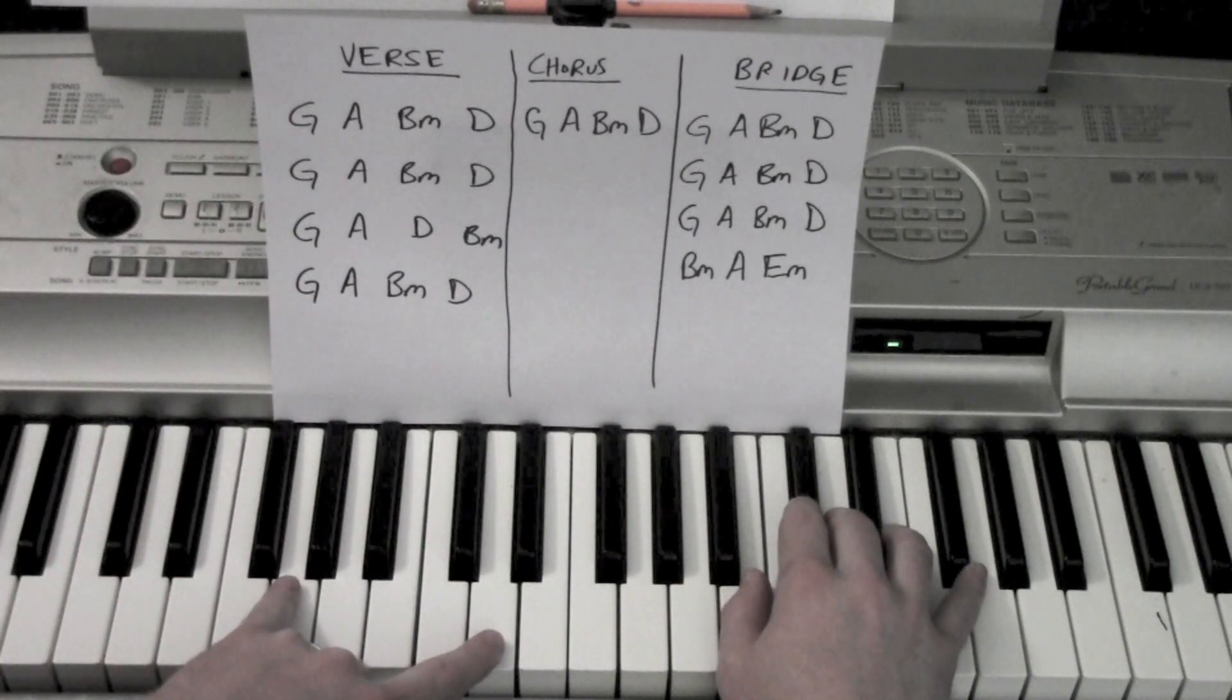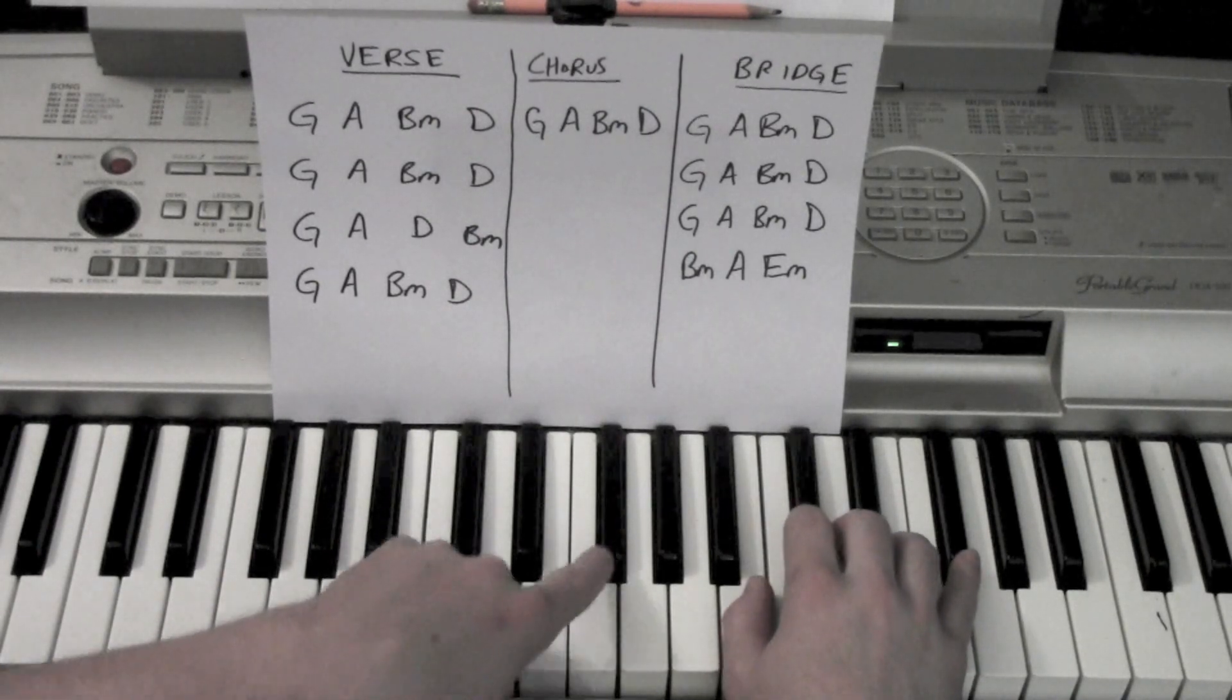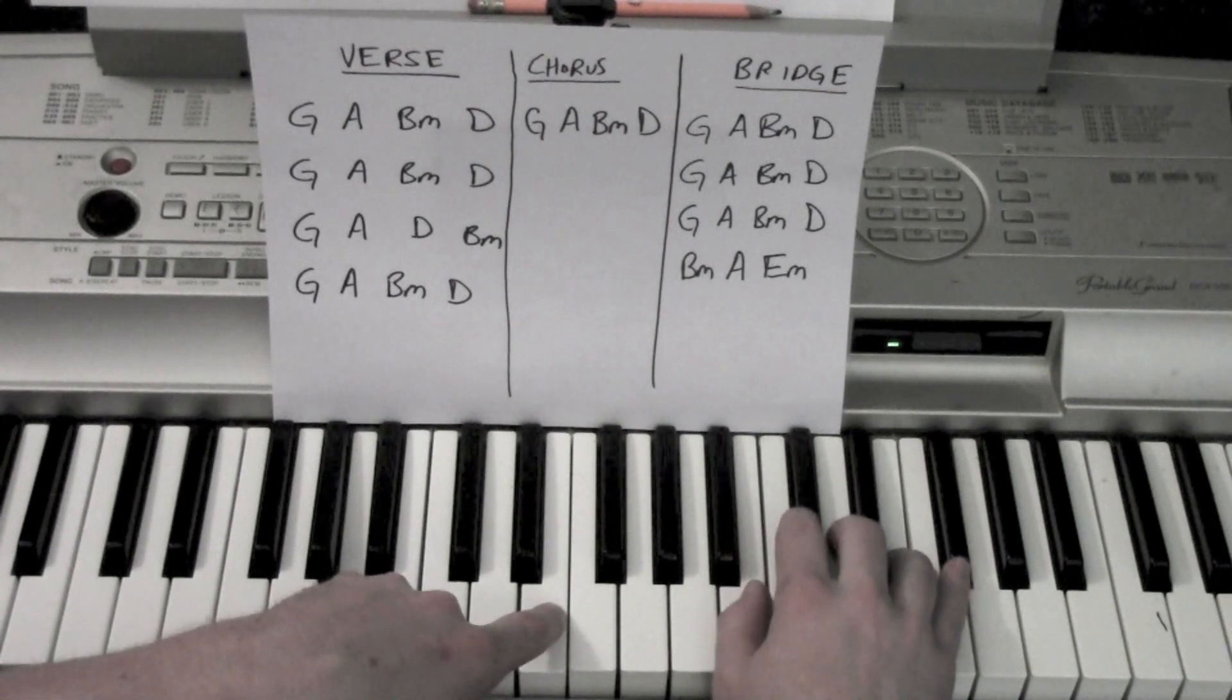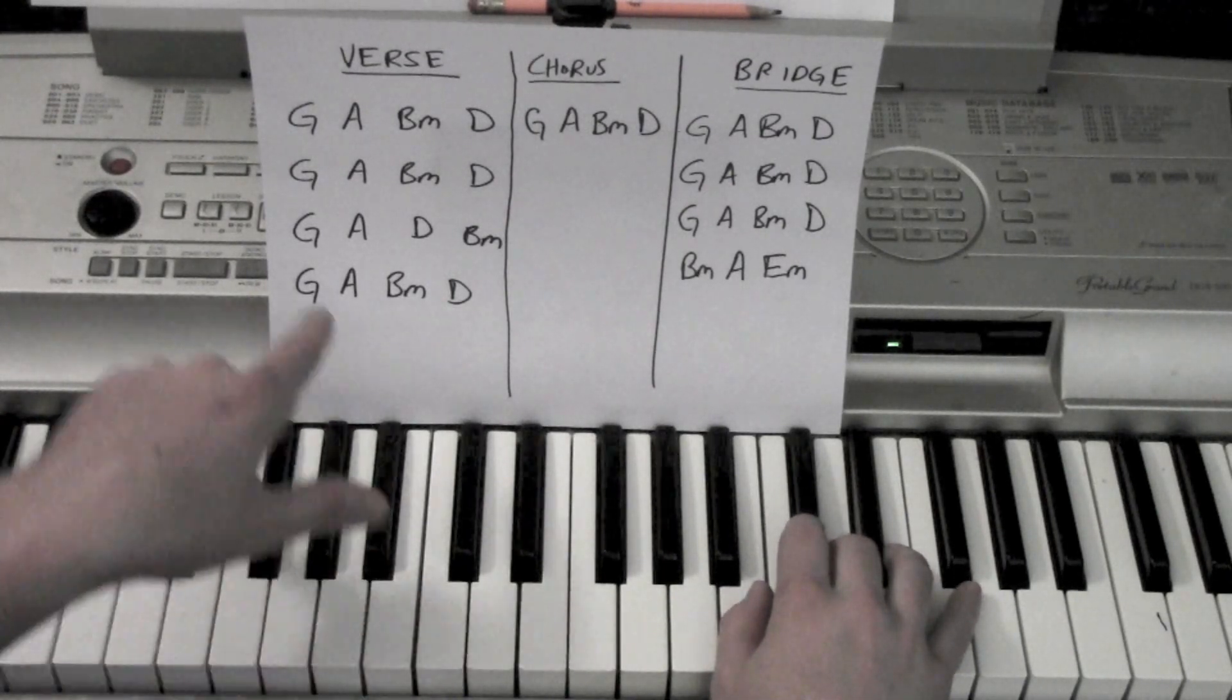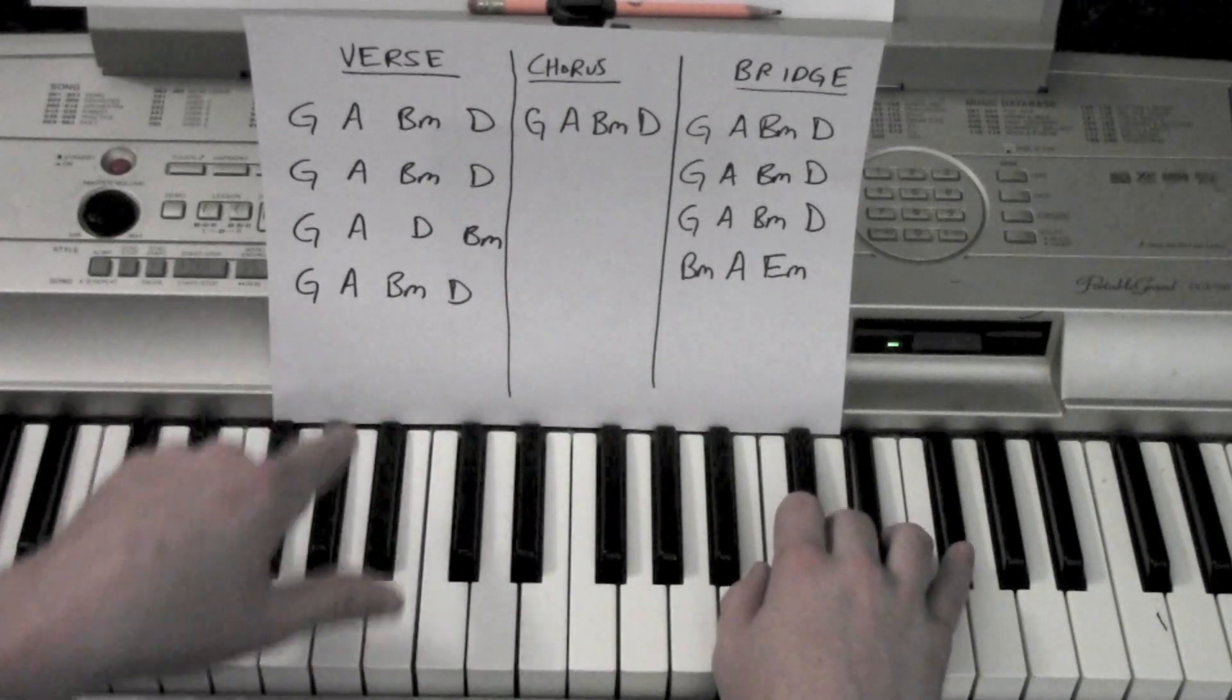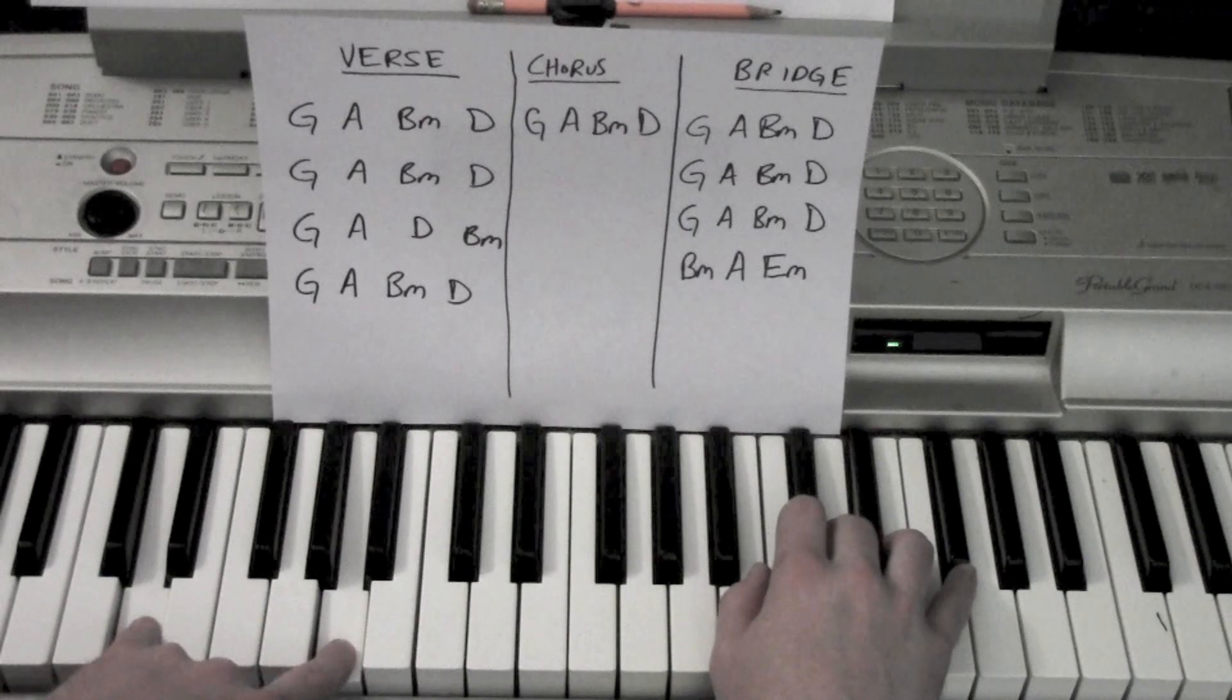Start from the beginning. I'll call out chords as we go. Seen the world, done it all, had my cake - that's G, A, B minor, down to D. Dying, Mon's River, Yon and bell air - G, A, B minor, down to D. Summer, we're on the third one - satsuma nights, mid-July - that's G, A, D, B minor. Last one: crazy days, city nights, play with me like a child - G, A, B minor, D.